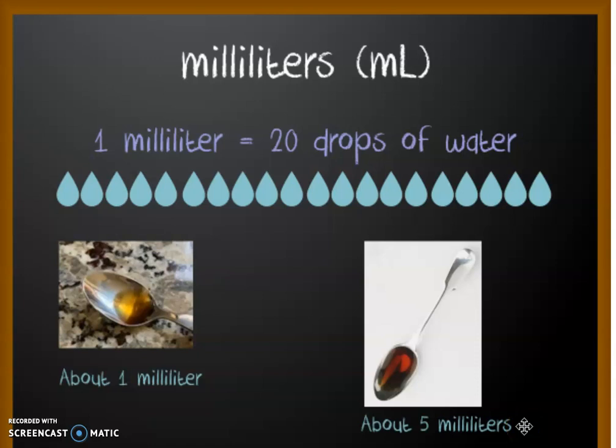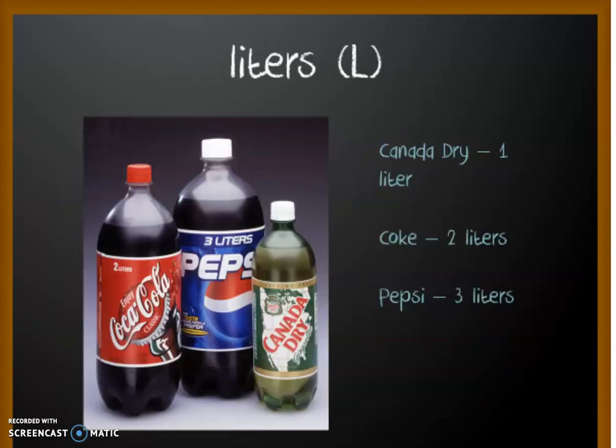So that gives you a good idea of how much liquid a milliliter is. And then if we think about a liter, how much is a liter of liquid? What kind of volume does that look like? We looked at these different bottles of soda. This bottle of ginger ale, that's one liter of soda. This bottle of Coke is two liters of soda, and this bottle of Pepsi is three liters of soda.